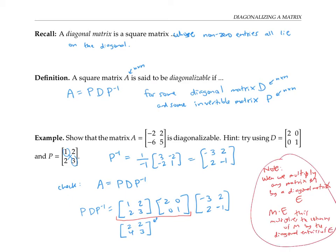Now that we have that note, let's continue with the problem. We still need to multiply by the P inverse matrix. Working that out, we get negative two, two, negative six, five — which is exactly the A matrix we started with. So indeed, the matrix A is diagonalizable, and these are the matrices D and P that do the trick.